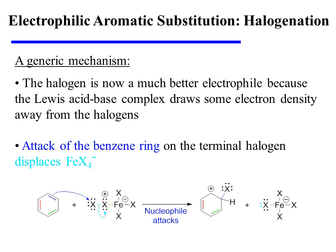The halogen is now a much better electrophile because the Lewis acid-base complex draws some electron density away from the halogens. The subsequent attack of the benzene ring on the terminal halogen displaces the iron-tetrahalide complex.